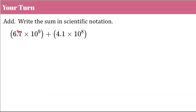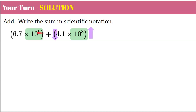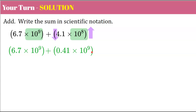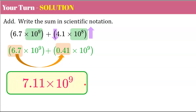Now it's your turn — add and write the sum in scientific notation. Pause and come back when you're done. Welcome back. First, check the powers — they are not the same, so I'll change the second. I need to make the exponent greater by one to match the nine, so the factor goes one digit smaller: move the decimal one space left to get 0.41, and the exponent increases by one to nine. Now add the factors: 6.7 plus 0.41 gives 7.11, keeping the power. Checking: one significant digit to the left of the decimal, between 1 and 10. This represents the sum in scientific notation.